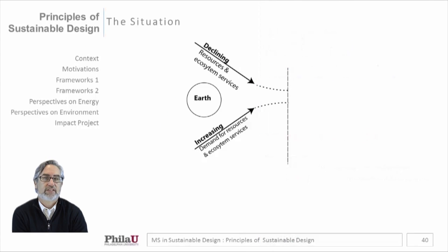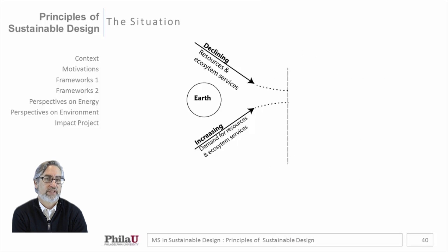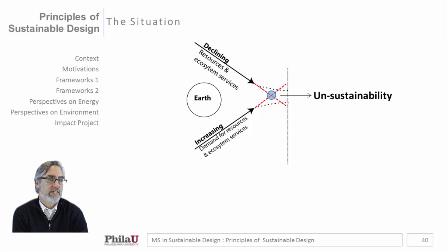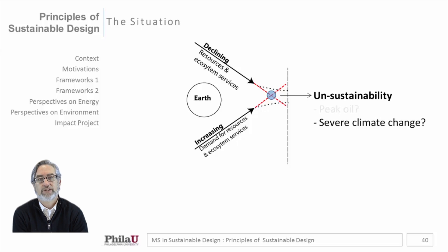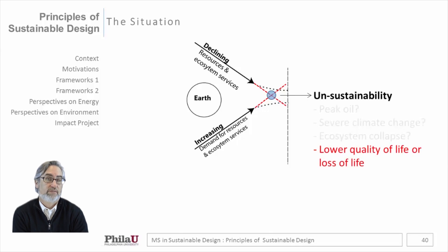We can begin the study by looking at the planet Earth, its declining resources, and the increasing demand for those same resources. When those vectors cross — and some say they already have — we reach a point of what's called unsustainability. Some of that is involving peak oil, severe climate change, ecosystem collapse, and loss of life and lower quality of life for millions.